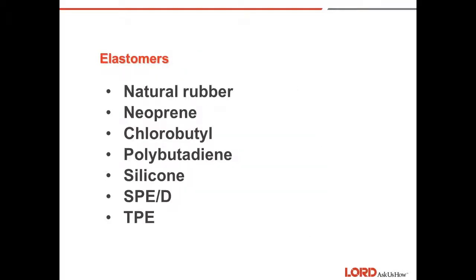Elastomers. There are several different types of elastomers that can be used in isolators. Natural rubber is the most common, as is neoprene. Natural rubber has very high tensile properties, and very resilient, and gives good fatigue life. Neoprene is oil resistant in some cases, and does well with fatigue life also. There's also chlorobutyl polybutadiene, silicone, which is one of the highly damp materials, and several other specialties. TPEs are thermoplastic elastomers that can be reprocessed.